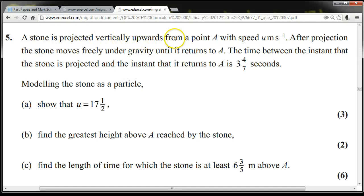A stone is projected vertically upwards from a point A with speed u meters per second. After projection, the stone moves freely under gravity until it returns to A. The time between the instant that the stone is projected and the instant that it returns to A is 3 and 4 sevenths seconds.